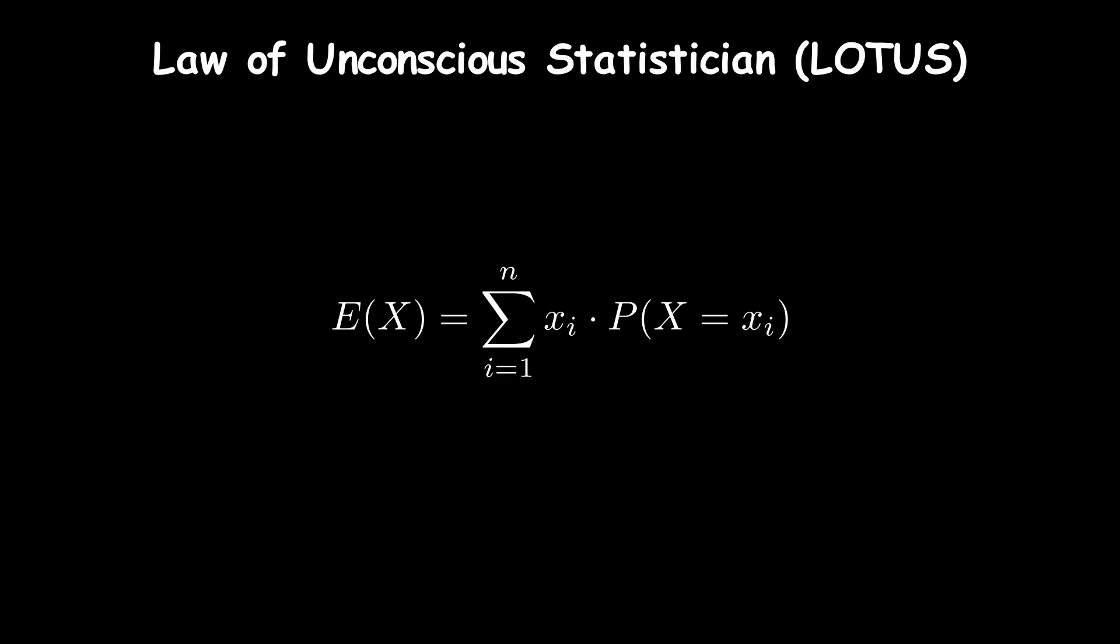Mathematically, the LOTUS formula is similar to the expected value formula except that we replace the random variable with the function of the random variable. Here, g(x) is the function applied to the value x of the random variable X.